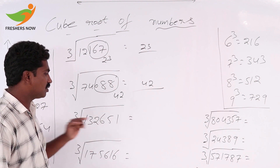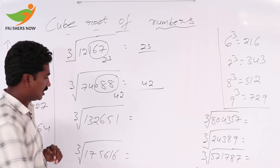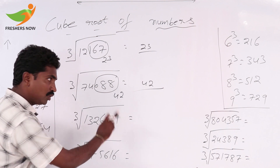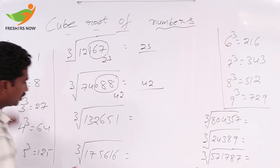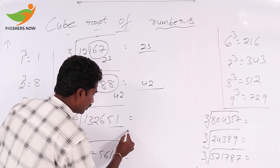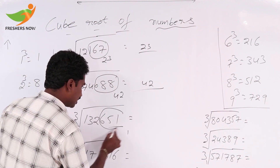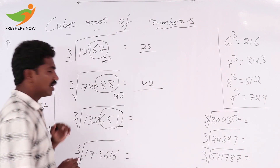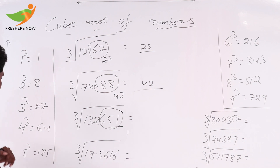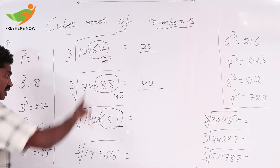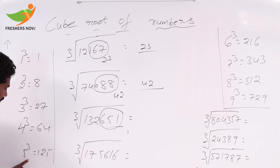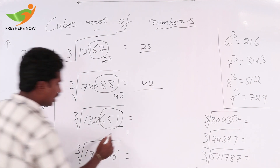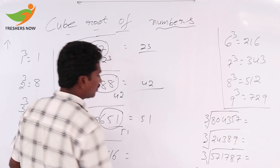Next, cube root of 132,651. At the units place value, 1 is there. 1 cube is 1, so units place value is 1. Reduce away — 132 is there. 5 cube is 125, 6 cube is 216. 216 is greater than 132, so the less-than value is 125. We take 5, so that value is 51.